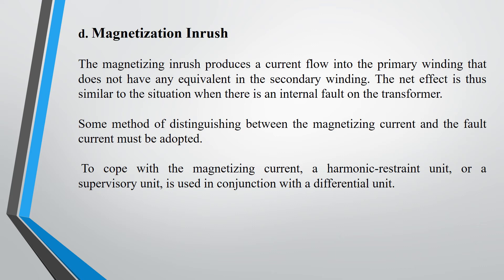The fourth consideration is magnetization inrush. When a transformer is given the supply, a magnetizing inrush current flows into the primary winding whose equivalent is not present in the secondary winding, as this magnetization inrush current is used to magnetize the iron core. The net effect of this will be considered as an internal fault by the differential protection. Thus, a unit must be added with the differential protection that can distinguish between the magnetizing current and the fault current. Generally, a harmonic restrained unit or supervisory unit is used with the differential unit to cope up with this magnetizing inrush current.